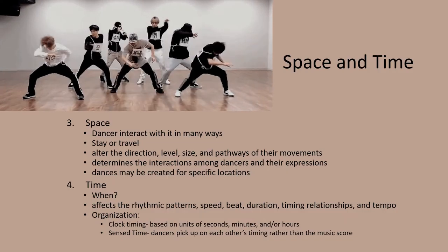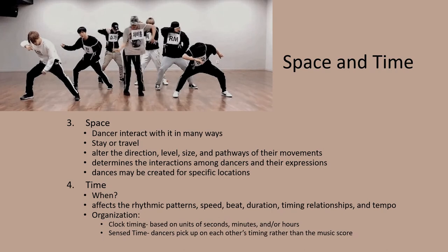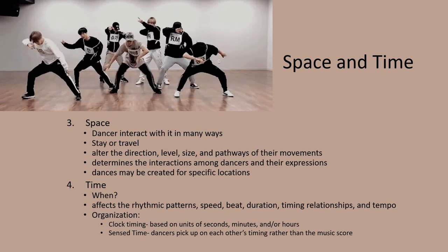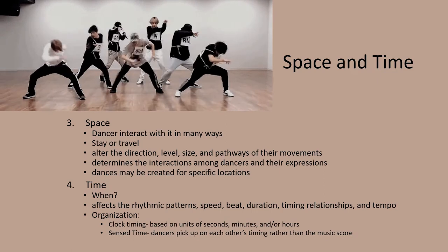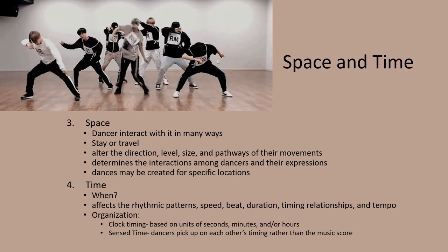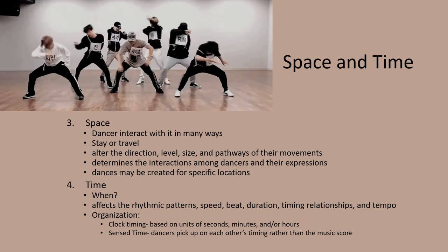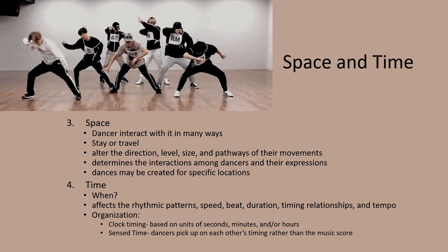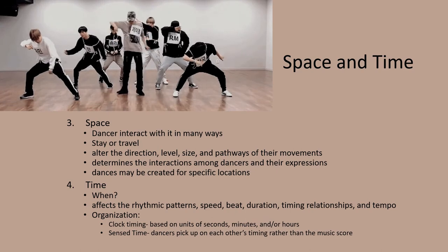Next are the third and fourth elements of dance: space and time. Dancers interact with space in so many ways. They may stay in one place or travel from one place to another. They may alter the direction, level, size, and pathways of their movements based on the space. Space determines the interactions among dancers and their expressions. Sometimes dances are created for specific locations such as an elevator or on a raft in a lake for site-based performances. Time is determined by the question of when. It affects the rhythmic patterns, speed, beat, duration, timing relationships, and tempo in a dance.